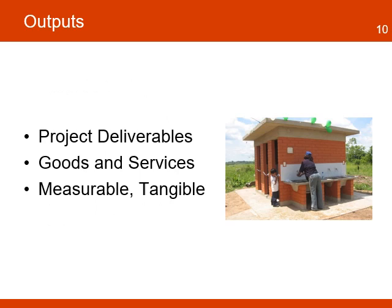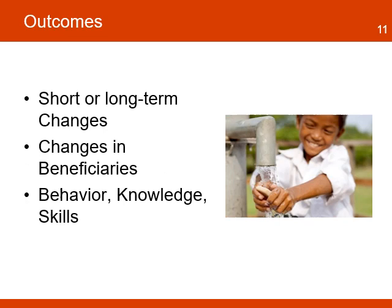Outputs are the direct deliverables of project activities and may include types, levels, and targets of services to be delivered by the project. They are the goods and services that are measurable and tangible, and they come as a direct result of activities implemented by the project. Outcomes are the specific changes, short and long term, expected as a result of the project outputs. Changes in participants can include behavior, knowledge, and skills. Short term outcomes should be attainable within one to three years, while long term outcomes should be achievable within a four to six year time frame.